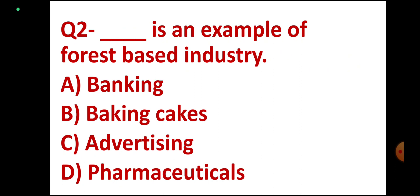Question number 2. DASH is an example of forest based industry. Options: Banking, Baking cakes, Advertising, Pharmaceuticals. Correct answer: Pharmaceuticals. Option D. Correct.